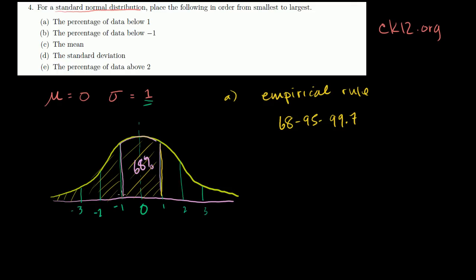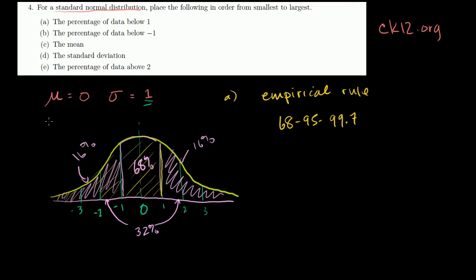If that middle area is 68%, everything else combined has to add up to 100%, so the left-hand tail plus the right-hand tail together are 32%. Because the distribution is symmetrical, each tail is 16%. For part A, they want the area of everything less than 1 — everything to the left of 1. So it's the 68% middle area plus the 16% left tail, which equals 84%. So part A is 84%.